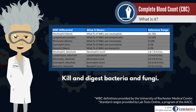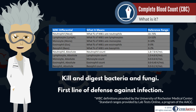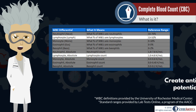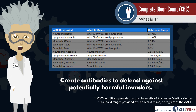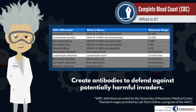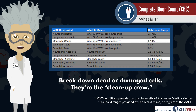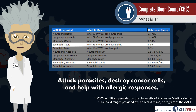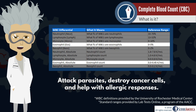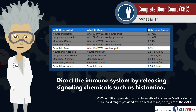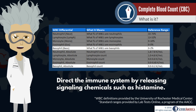Neutrophils kill and digest bacteria and fungi. They're the most numerous white blood cells and are the first line of defense against infection. Lymphocytes create antibodies to defend against potentially harmful invaders. Monocytes break down dead or damaged cells — they're the cleanup crew, so to speak. Eosinophils attack and kill parasites, destroy cancer cells, and help with allergic responses. Basophils sound the alarm by releasing signaling chemicals such as histamine, and help to direct and control the body's immune response.